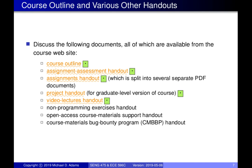There's also a Course Materials Bug Bounty Program. If you find any mistakes in course materials — handouts, lecture slides, whether typos or technical errors — and report them to me by email, you can get bonus marks. The handout explains the rules and how the bonus mark is calculated. This helps me improve the quality of the slides, since otherwise students might find mistakes but not report them.